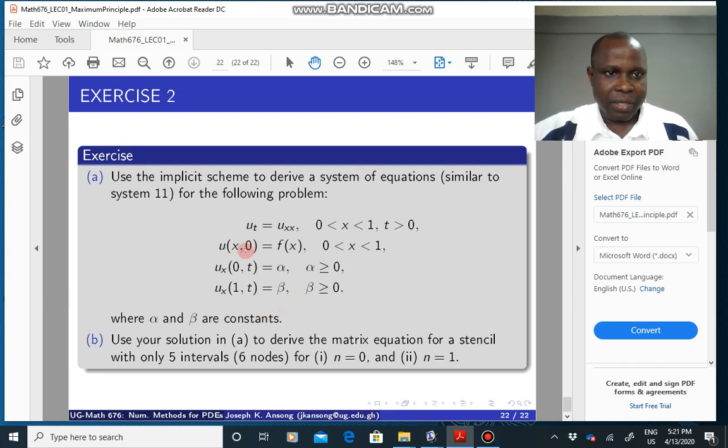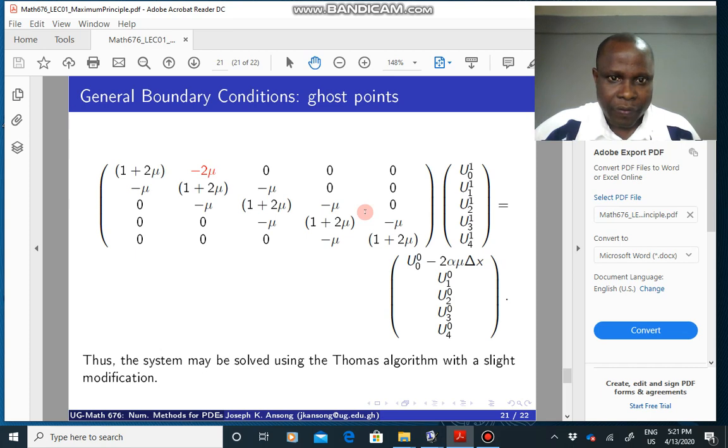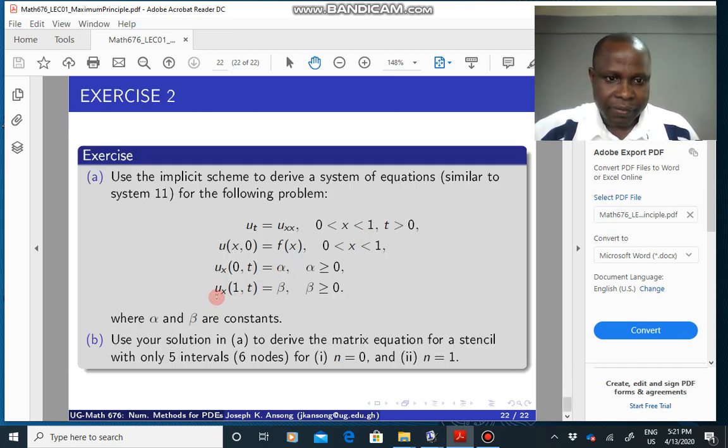So here's an exercise that you can also try. Work this out and you submit your solutions. You want to use the implicit scheme to derive a system of equations similar to 11, similar to this system here. But in this case, apart from the left boundary which is Neumann, the right boundary is also Neumann. So there you go. And then you use your solution in A here, the system that you have here, to derive a matrix equation, something similar to this. Derive a matrix equation when n is 0 and when n is equal to 1.